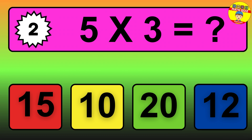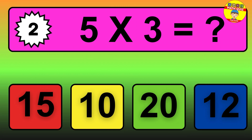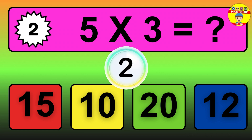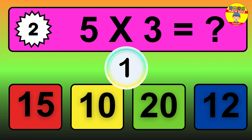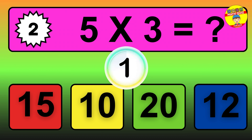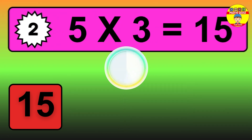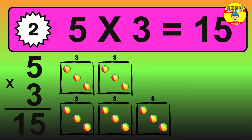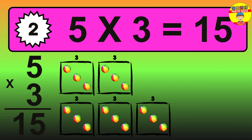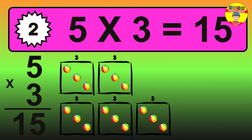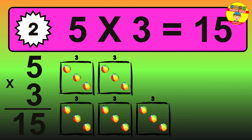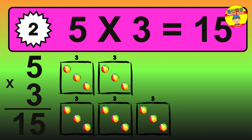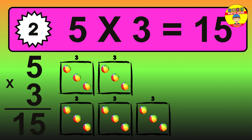Question 2. 5 times 3 equals what? The answer is 5 times 3 is 15. To calculate, we have 5 groups with 3 balls each one. So, how many balls do we have? 15 balls.